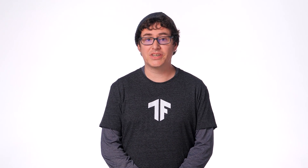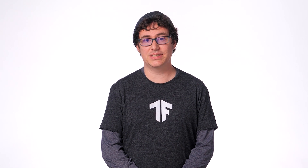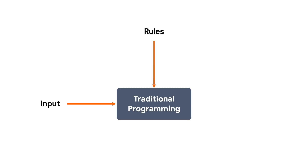So let's get started by talking about what machine learning even is. With traditional programming languages, you provide an input and a function, then the program produces an output. For example, you might have a function that adds two to any input number — so 1 outputs 3, 8 outputs 10, and 40 outputs 42.